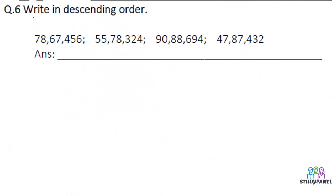Question 6: Write in descending order. Descending order means greater to smaller — that is, from the biggest number to the smallest number. First, whenever we have to find out the descending order, we need to remember one thing.